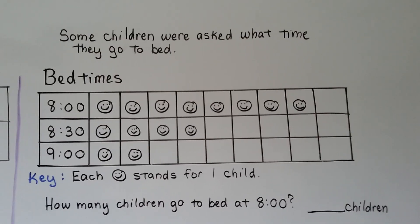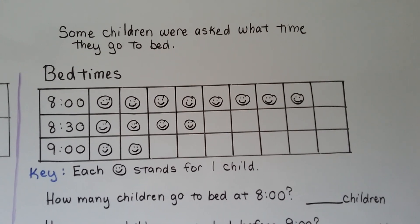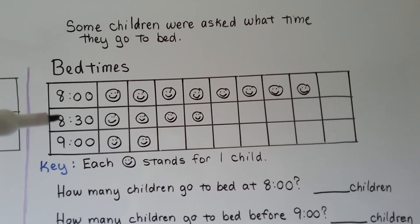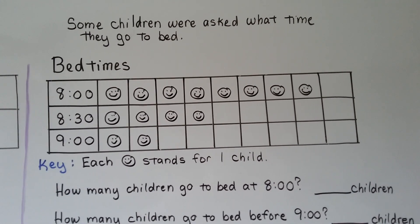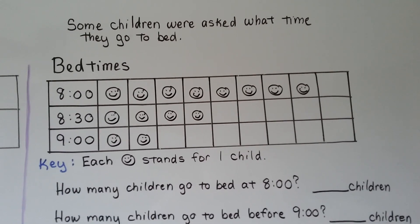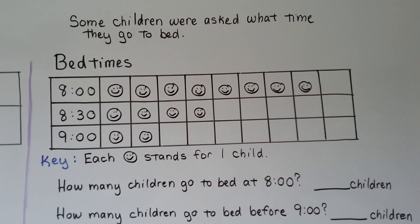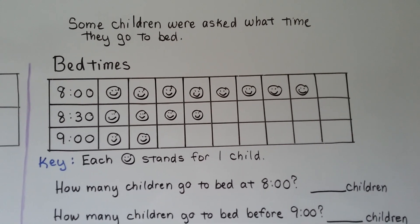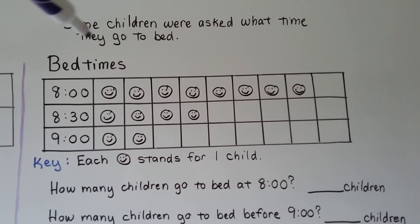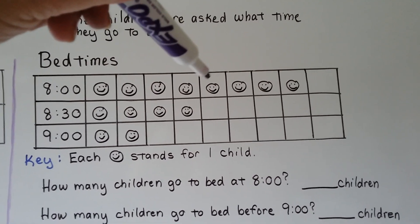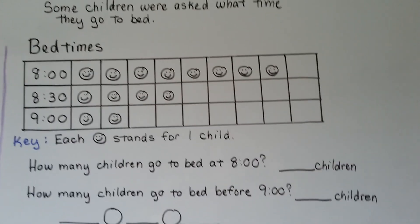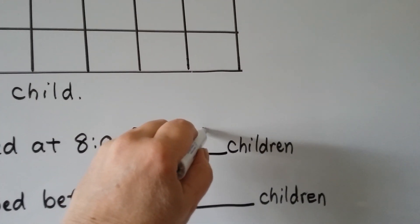Some children were asked what time they go to bed. Some children said eight o'clock, some said eight thirty, and some said nine o'clock. The key tells us that each smiley face stands for one child. So how many children go to bed at eight o'clock? We look at eight o'clock and count: one, two, three, four, five, six, seven, eight. There are eight children who go to bed at eight o'clock.